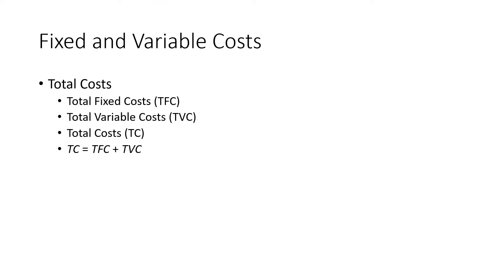Then we have total cost. Total cost is basically the summation of fixed cost and variable cost. So: Total Cost = Total Fixed Cost + Total Variable Cost. These two combined make the total cost.